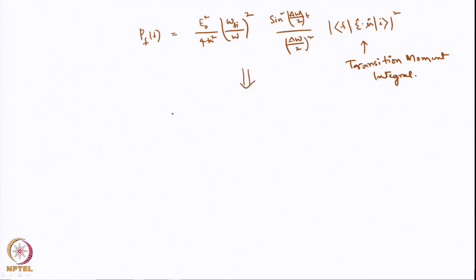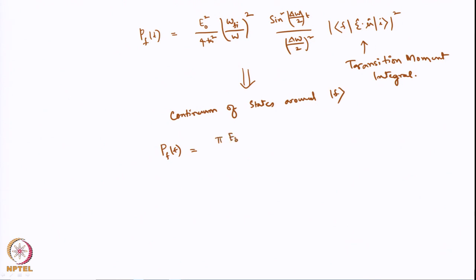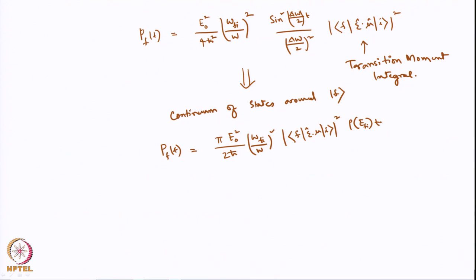And for a continuum of states around f, we showed that P_f(t) was equal to pi E0 squared over 2 h-bar times (omega_fi / omega) squared, times the modulus squared of <f|epsilon dot mu|i>, times the density of states rho(E_fi), times t.